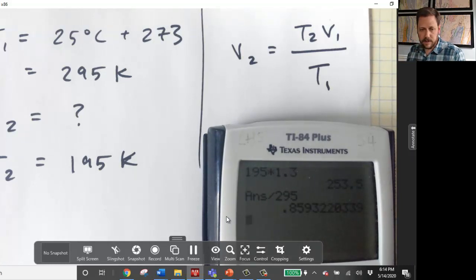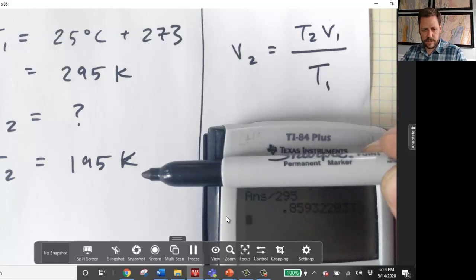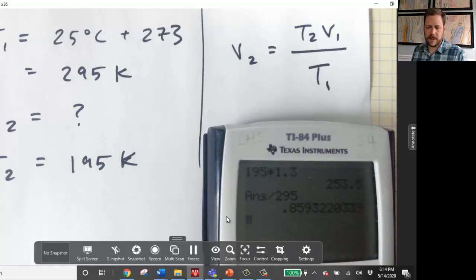Now that is a lower volume than original. So that makes sense. If the temperature drops, the volume drops. And not only that, the temperature has dropped by about one-third of the total temperature in Kelvins, and the volume has been decreased by about one-third. So that makes sense.